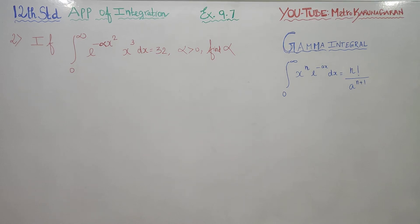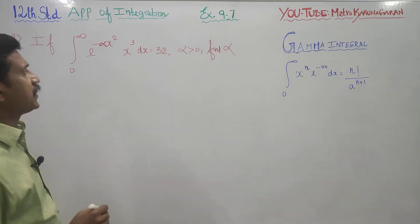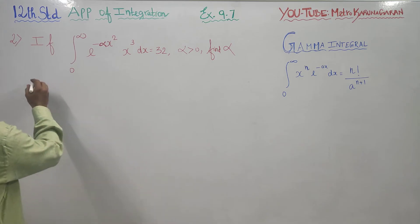Dear 12th standard students, in exercise number 9.7, sum number 2, the integral from 0 to infinity of e to the power minus alpha x squared times x cubed dx equals 32, alpha is greater than 0. Find the value of alpha. First of all, I will change this sum.